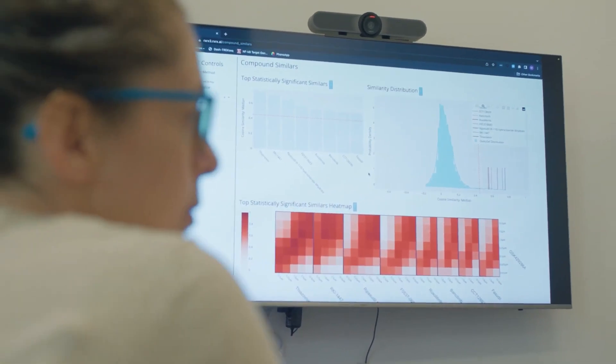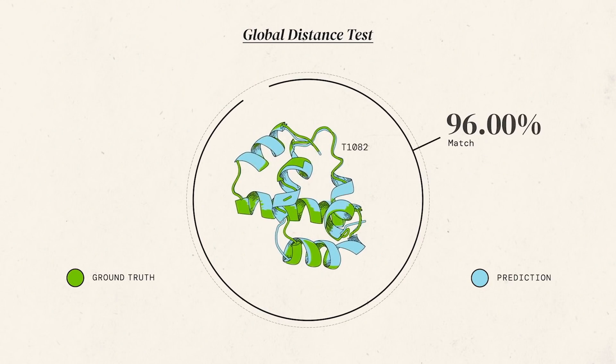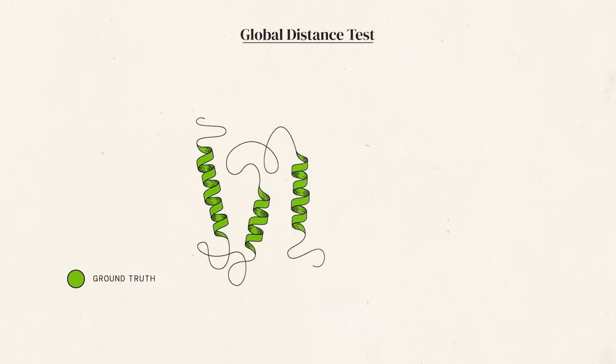Isomorphic Labs uses this AI to understand how drugs can interact with the body at a molecular level, aiming to design more effective treatments. This collaboration represents a practical application of AlphaFold3's predictions, transforming theoretical models into potential real-world solutions that could one day be used to treat patients.